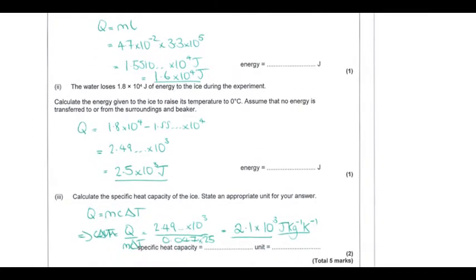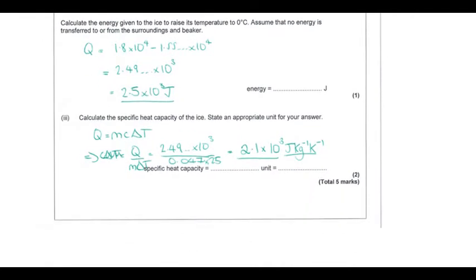The water loses a known amount of energy due to its temperature change. The energy given to the ice to raise its temperature is the difference between the total energy received and the energy used for the phase change. Using the unrounded value from the first part gives approximately 2500 J, or 2.5 times 10 to the 3. With that energy, the mass, and a temperature change of 25 degrees (from minus 25 to zero), we can calculate the specific heat capacity.